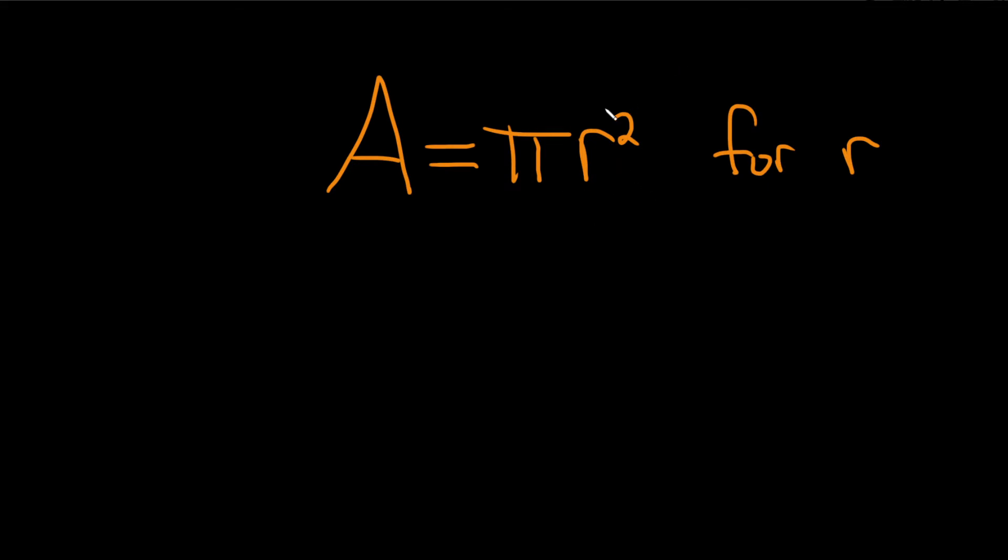We'll start by isolating r squared. Since it's being multiplied by pi, we'll divide both sides by pi like this. These cancel, and so we have A over pi, and that's equal to r squared.